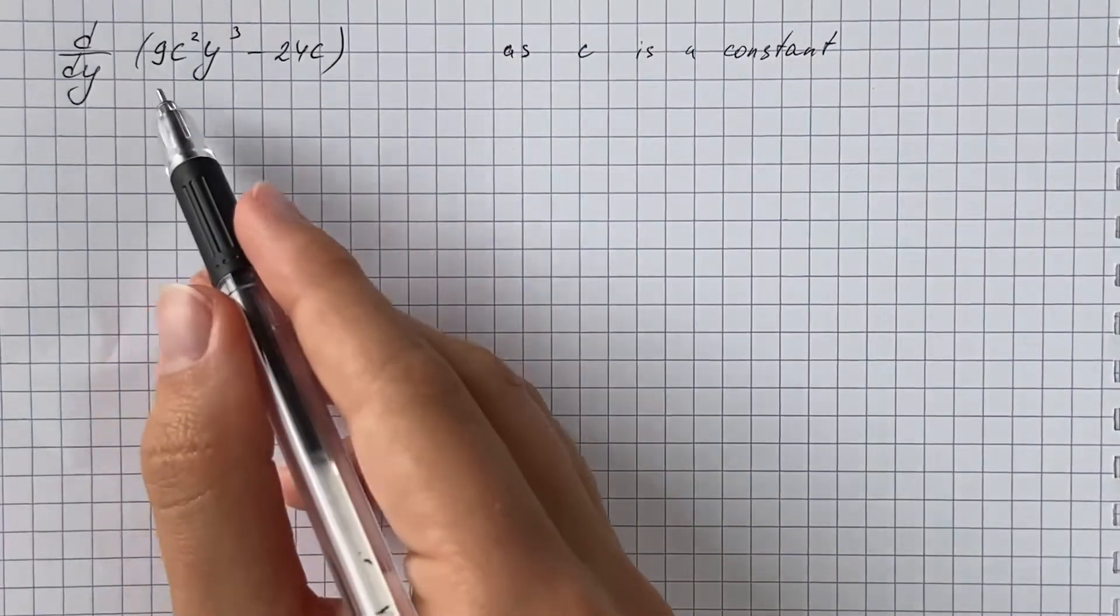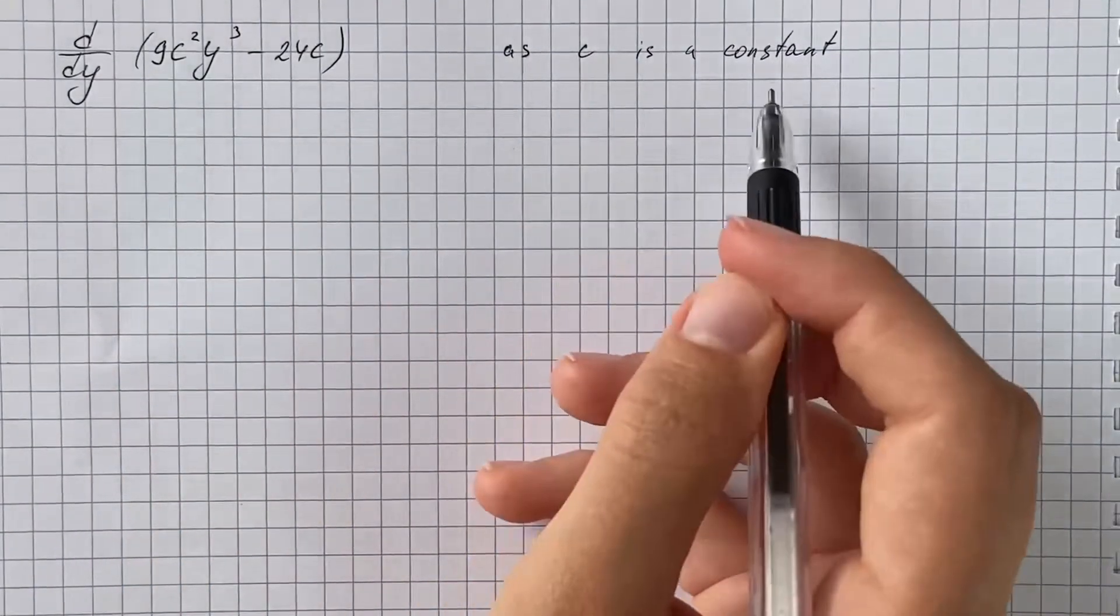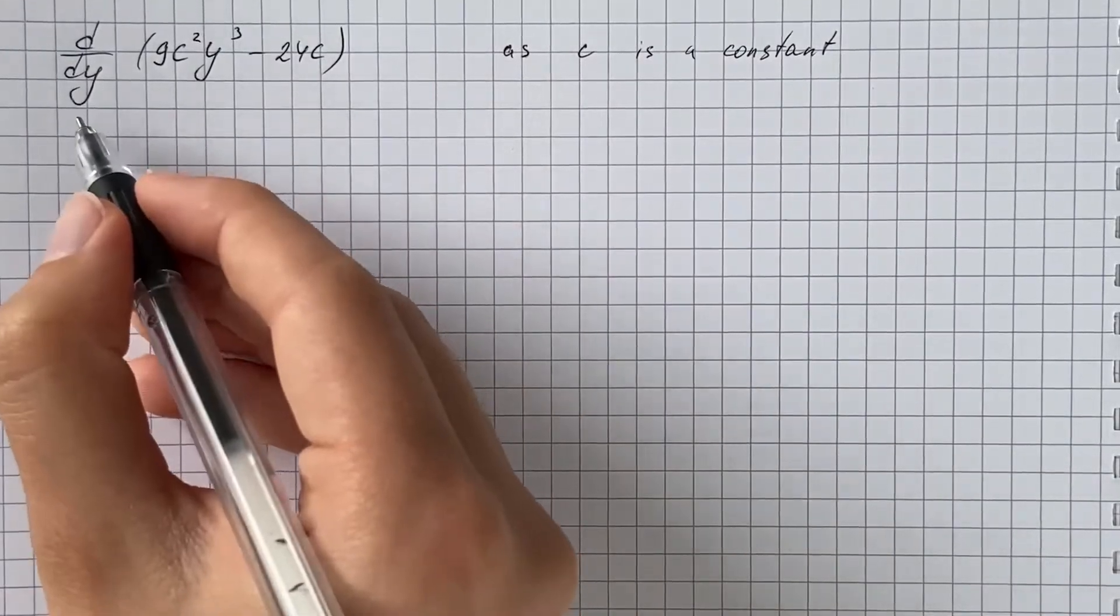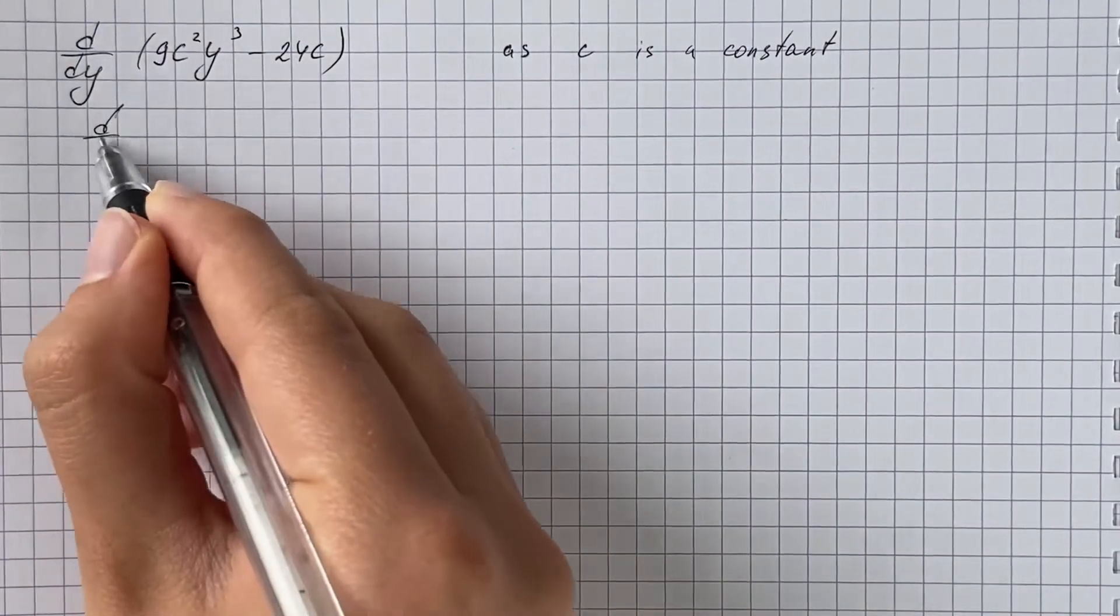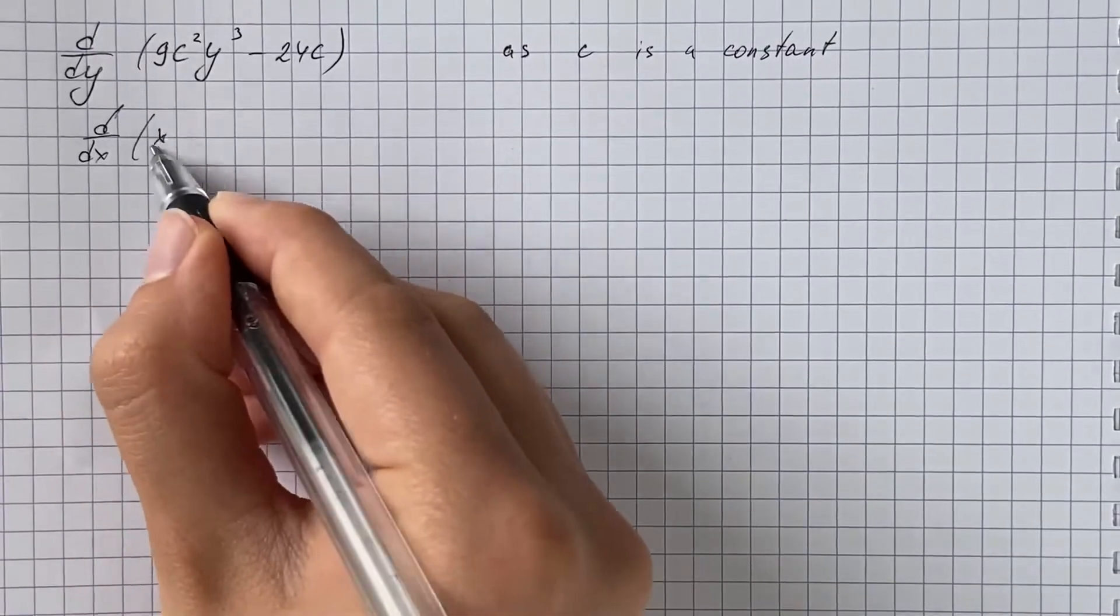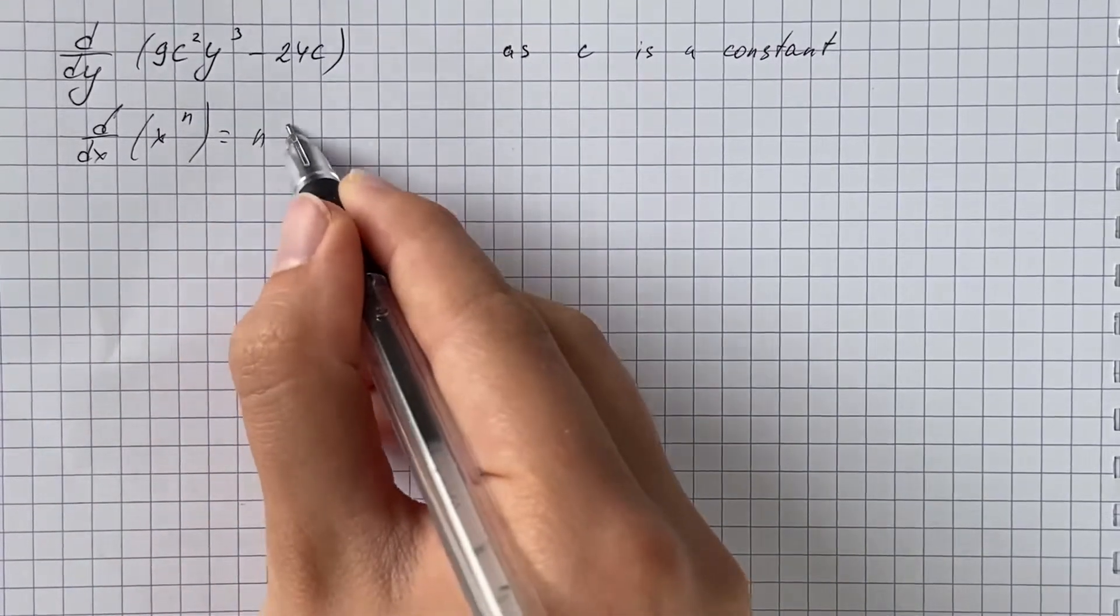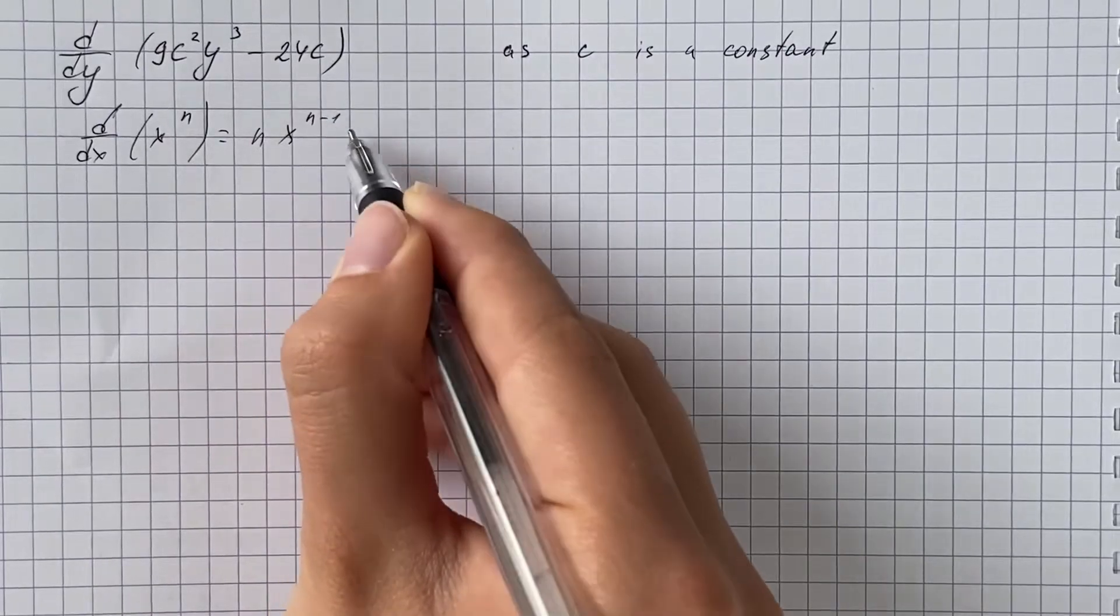We have to compute the given derivative where c is a constant, so here we're gonna use power rule which says the derivative with respect to x of x to the power of n equals n times x to the power of n minus 1.